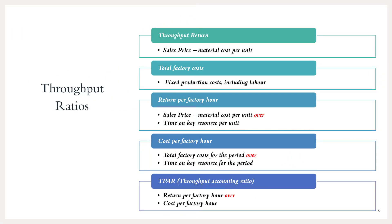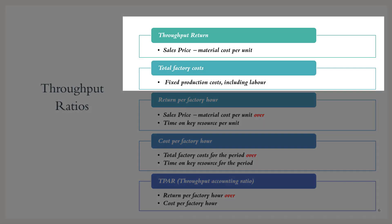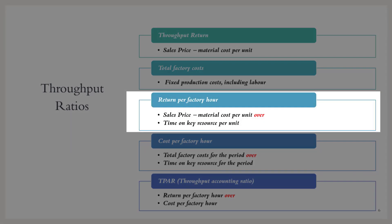Now let me introduce throughput accounting and the ratios. First, we start with throughput return: throughput is sales price minus material cost per unit. The only cost considered variable in throughput accounting is the material cost. Notice labour is included as part of total factory costs — that's an important point and will be a trick in questions. So throughput accounting considers all costs fixed other than materials. The return per factory hour is calculated as the throughput return over the time on the key resource per unit. The key resource is the bottleneck process — dough mixing in our example.